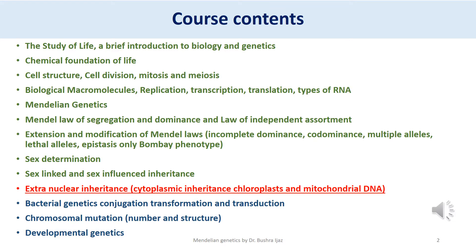Assalamu alaikum class. Today I am here with the fourth last lecture of our series of online lectures. We have covered Mendelian genetics, Mendel's law of segregation and the law of independent assortment, extensions and modifications of Mendel's laws including incomplete dominance, co-dominance, multiple alleles, and sex determination and sex-linked and sex-influenced inheritance patterns. Today I am going to discuss extra nuclear inheritance, also referred to as cytoplasmic inheritance.